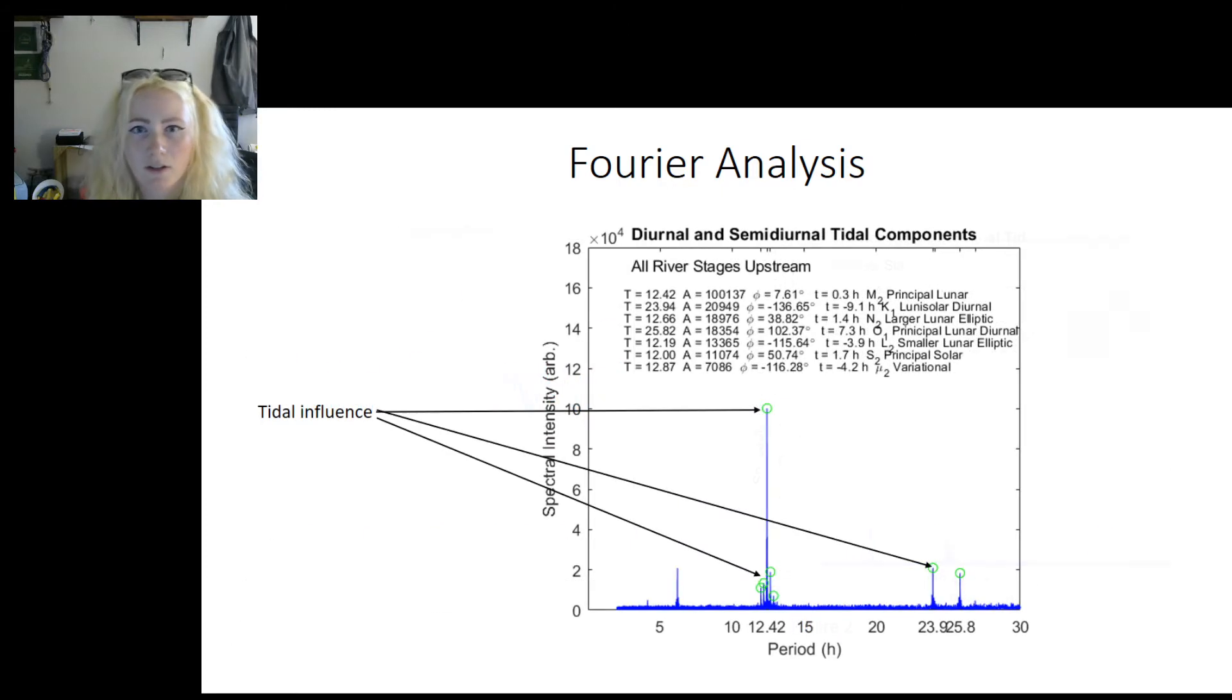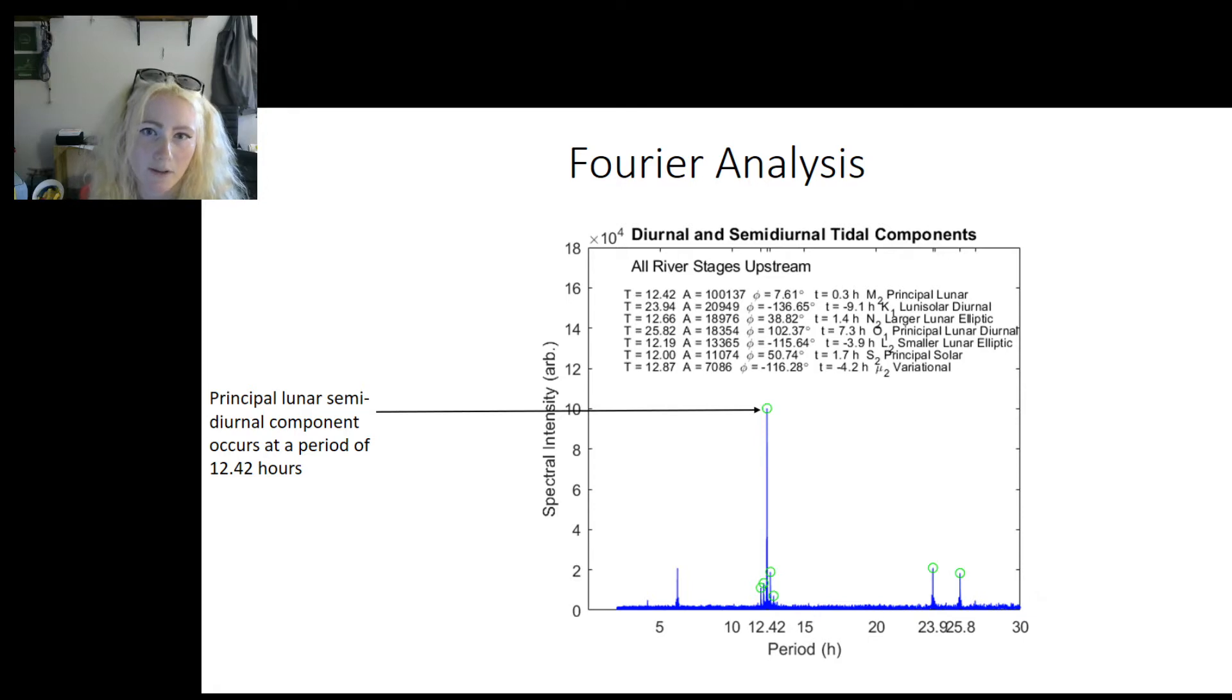The green circle points on the graph indicate a tidal influence at the USGS gauge in Everett City on the Altamaha River. For there to be tidal indication, the spectral intensity must be three standard deviations above the local noise. Here is the principal lunar semi-diurnal component that occurs at a period of 12.42 hours that we really look for in determining tidal presence.